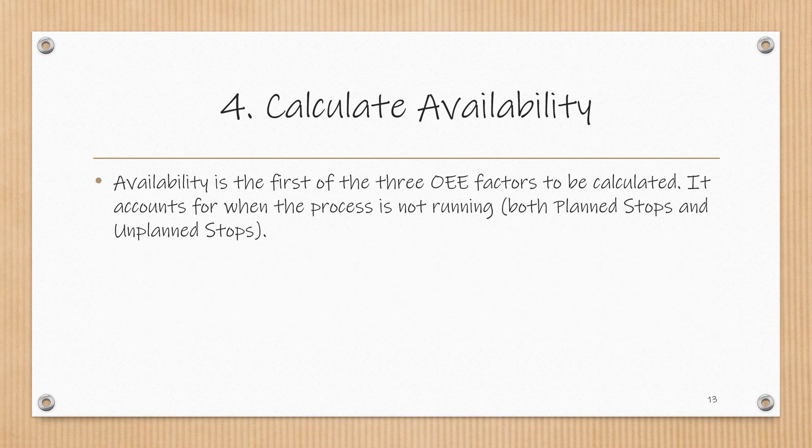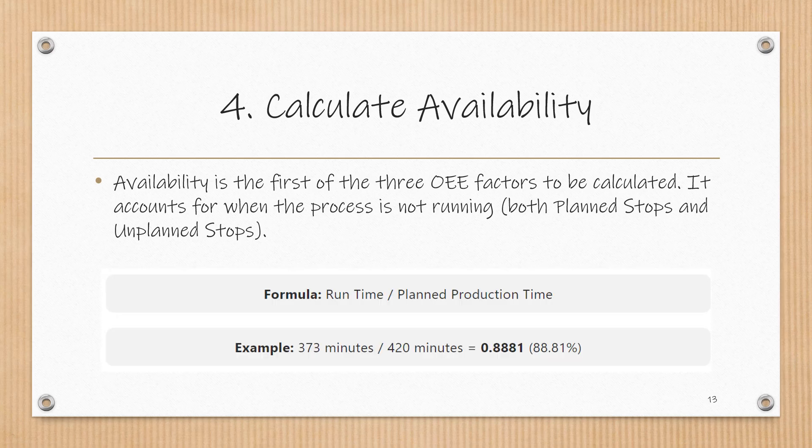Availability is the first of the three OEE factors to be calculated. It accounts for when the process is not running, both planned stops and unplanned stops. The formula for availability is runtime divided by planned production time. In our example, 373 minutes of runtime divided by 420 minutes of planned production time results in an availability value of 88.81%.